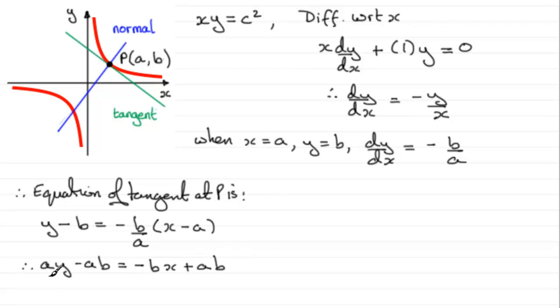And I could rearrange this still, put it in the form AX plus BY plus the constant equals zero. So if we do that, I add BX to both sides, so you've got therefore BX plus AY. And then we've got to subtract AB from both sides, so we end up with minus 2AB, and that would equal zero.